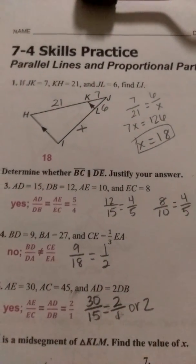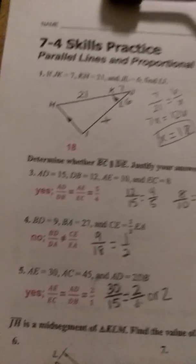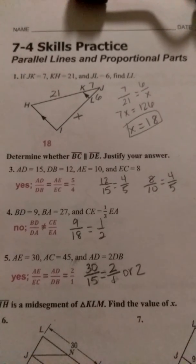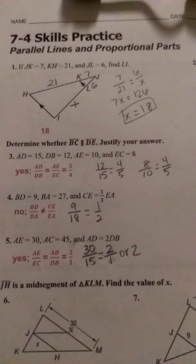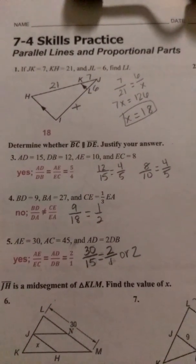On 7-4 we're just continuing the ratios and proportions, but this time using parallel lines, specifically parallel lines within a triangle.